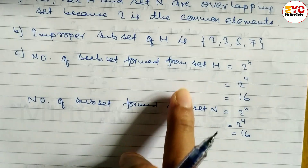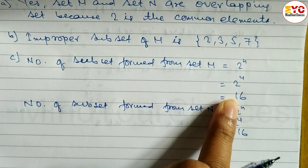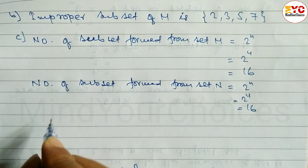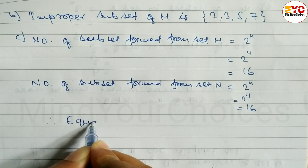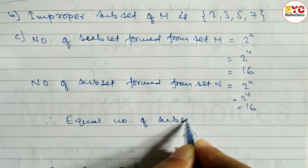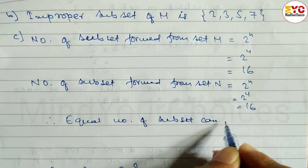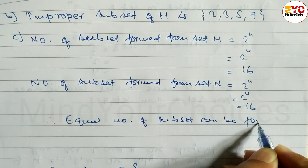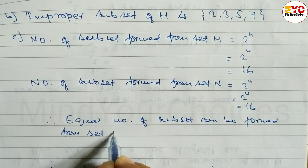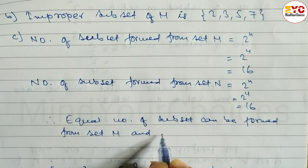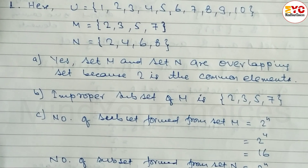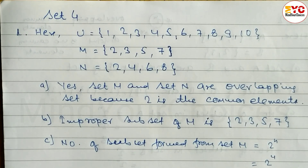Both set M and set N have 4 elements each, so an equal number of subsets can be formed from set M and set N. Hope you understand this question, taken from Set 4, question number 1.